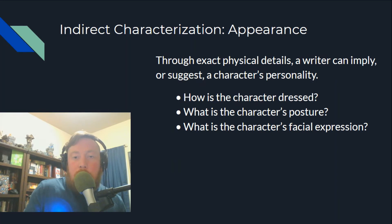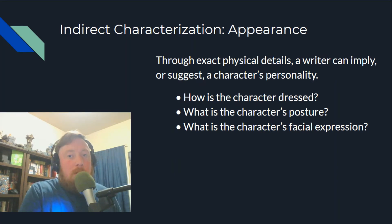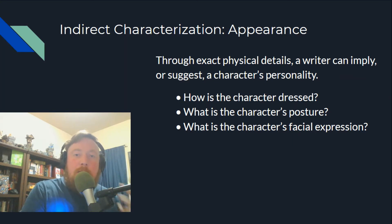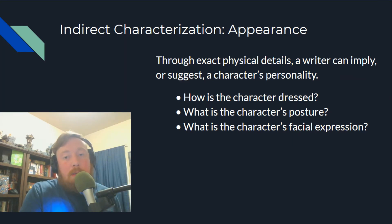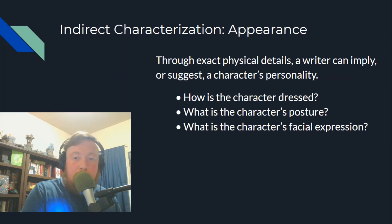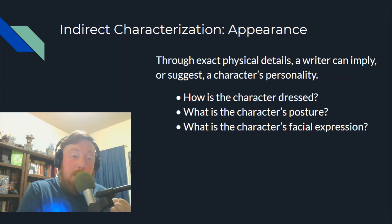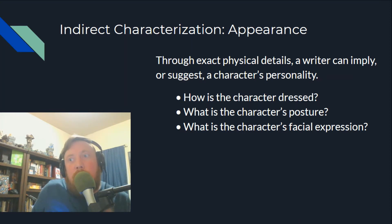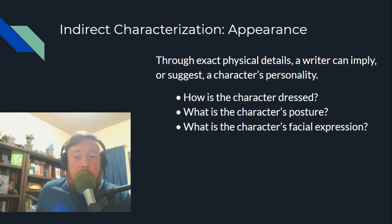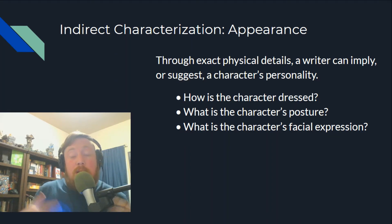The first type is appearance. Through exact physical details, a writer can imply or suggest a character's personality. How is the character dressed? What is their posture? What is their facial expression? Are they clenching their hands? Are tears rolling down their face? Are they wearing a coat? All of those have to do with appearance, and that's also where you often see symbolism attached to characters.